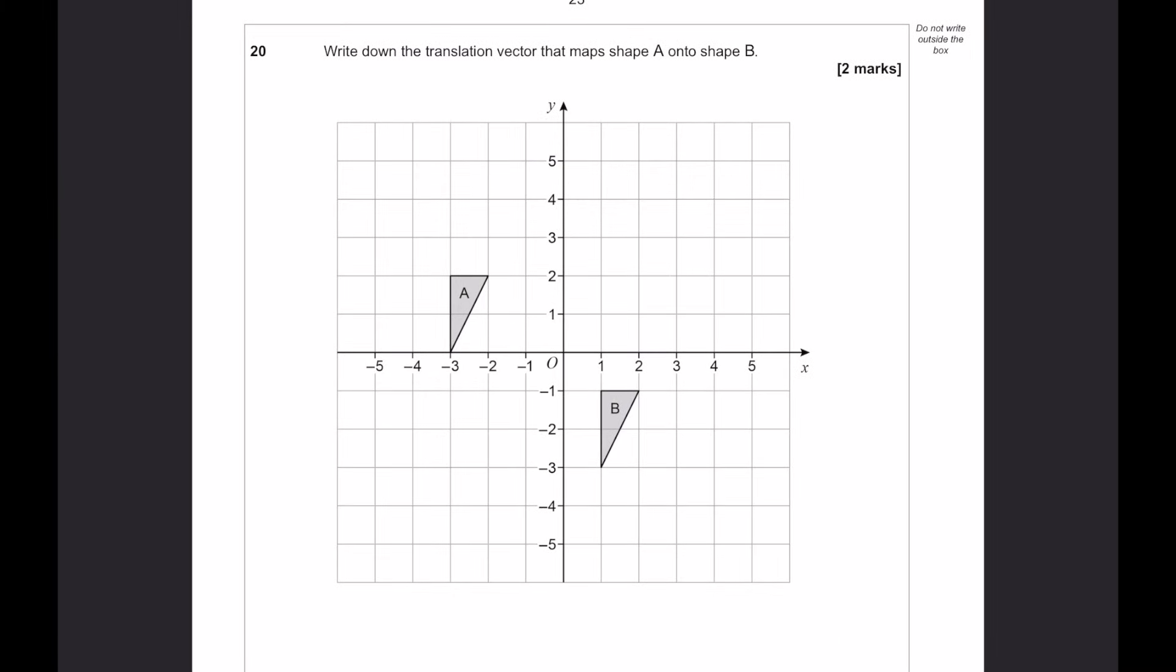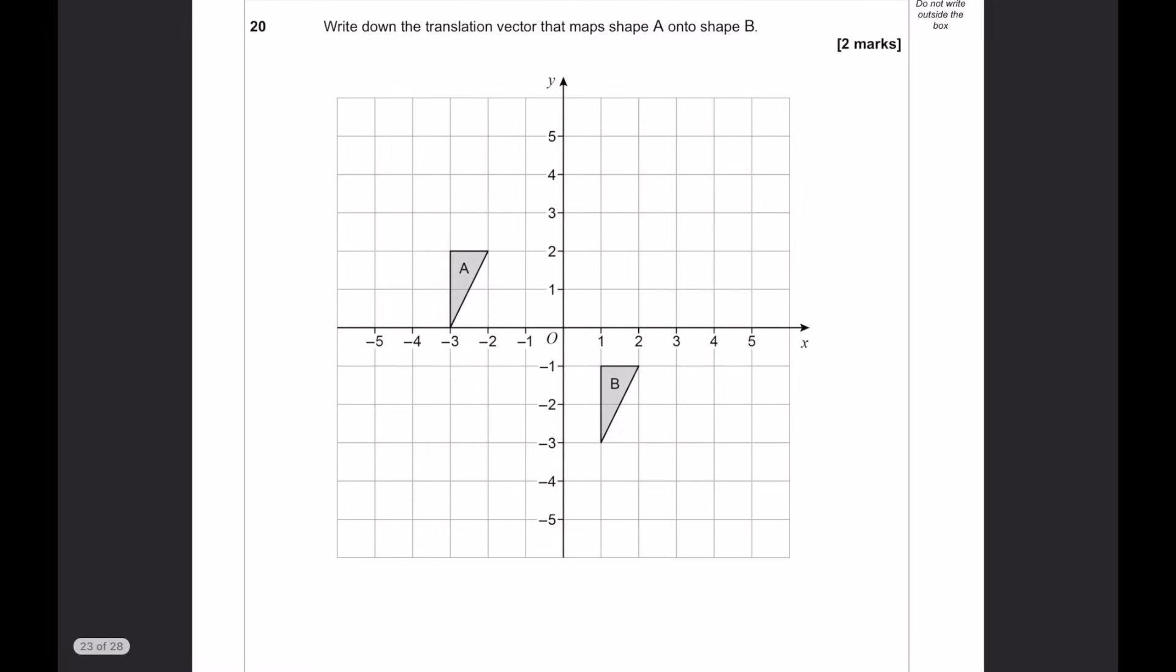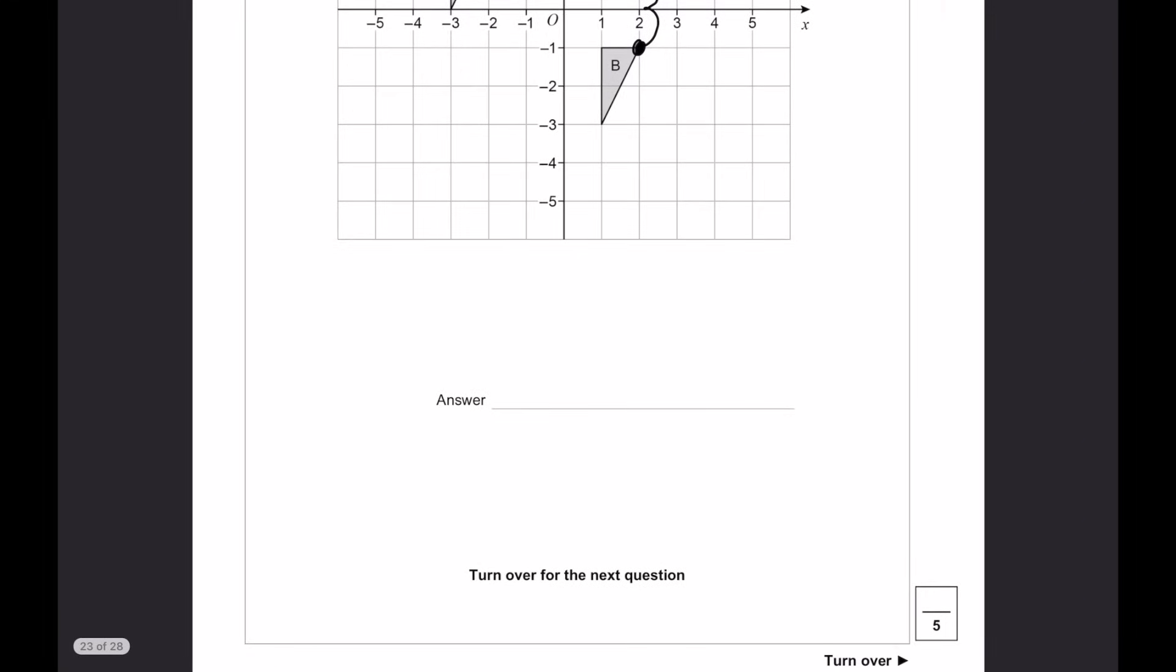Write down the translation vector to get from A to B. Translation vector, how many do we go to the side, and how many do we go up or down? So, we start, pick this corner here, and we want to work out how many it is to get to this corner here. 1, 2, 3, 4 across, 1, 2, 3 down. So, it's going to be 4 to the right, so positive 4 on the top, 3 down, so negative 3 on the bottom.